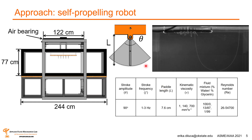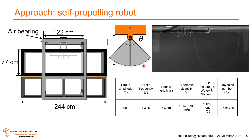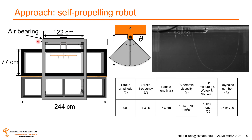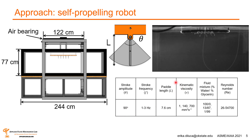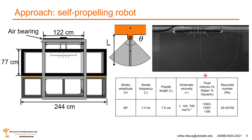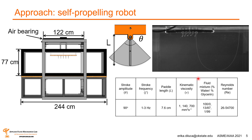To test this, we implemented kinematic data collected from live shrimp into a self-propelling robot attached to an air bearing, which limits friction during swimming. We changed stroke frequency independently while holding kinematic viscosity constant, and changed kinematic viscosity independently while holding stroke frequency constant. For kinematic viscosity, we varied the percent water-to-glycerin mixture that the robot swam in.